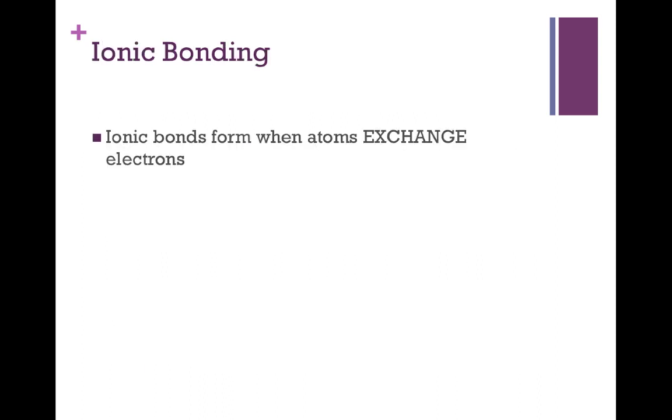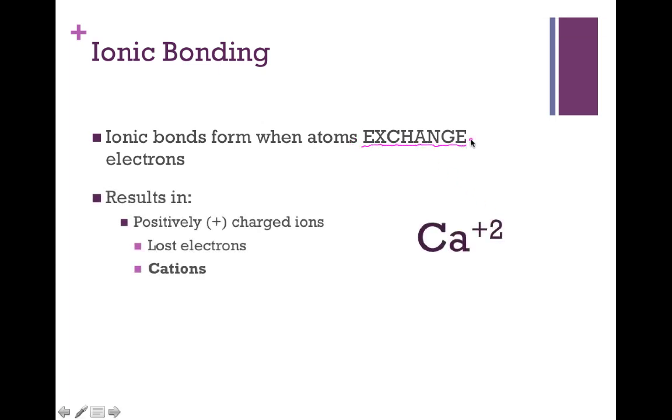Now that we've established why bonding itself happens, let's dive right into the specifics of this video, ionic bonding. In ionic bonds, bonds form when there is an exchange of electrons. And that exchange is going to be characterized by a gain and a loss.